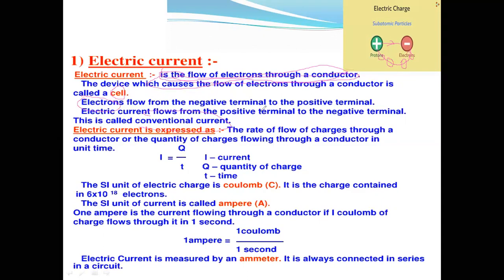Electric current flows from the positive terminal to the negative terminal. The rate of flow of charges through a conductor, or the quantity of charges flowing through a conductor in unit time, defines electric current.